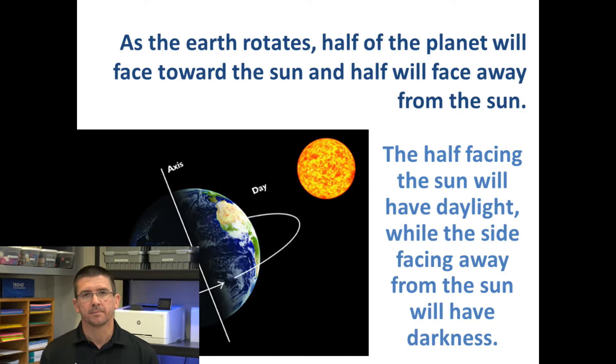As the Earth rotates, half of our planet will be facing toward the Sun, and half of the planet will be facing away from the Sun. The side of Earth that is facing toward the Sun will have daylight because the Sun is illuminating it, whereas the side that's on the opposite will have nighttime because Earth is blocking this side from receiving any sunlight, therefore it's dark.